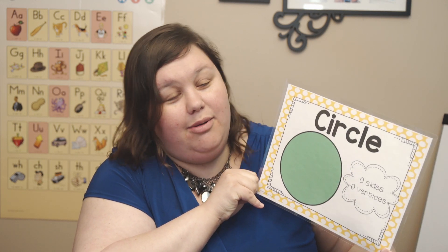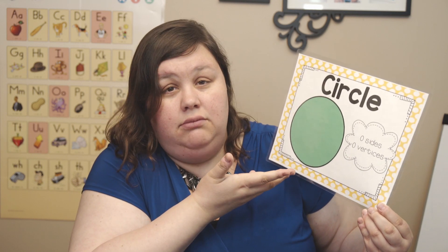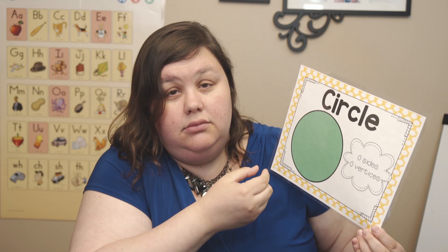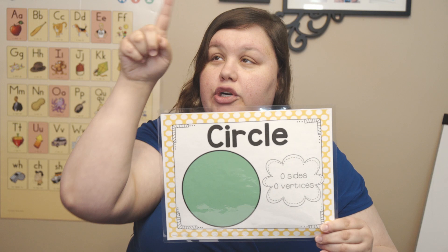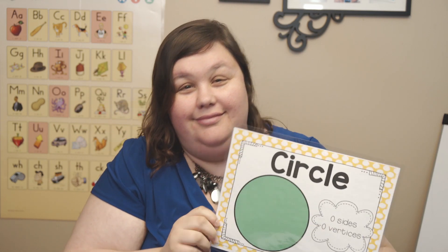Good job. I have a special song that I sing with circles to help us remember it has zero sides and zero vertices. Zero means none — there isn't any, it means nothing. Circle, circle, circle, circle, pop pop pop pop pop. You can draw a circle in the air with me. Does that circle we draw have any corners? No, it's just one curved line. Great job, let's move on to the next one.